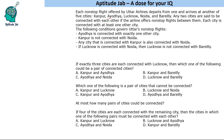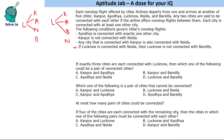Question 1: If exactly 3 cities are each connected with Lucknow, which one of the following could be a pair of connected cities? So apart from Lucknow, there are 4 cities: Kanpur, Ayodhya, Noida, and Bareilly. It says 3 cities are connected with Lucknow — 3 out of these 4. Now, if you read the last condition, if Lucknow is connected with Noida, then Lucknow is not connected with Bareilly. So Lucknow cannot be connected with both these cities — either Noida or Bareilly, not both.